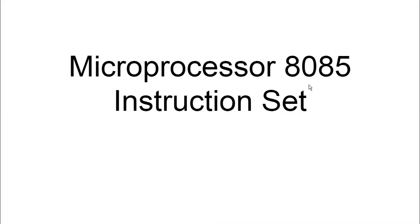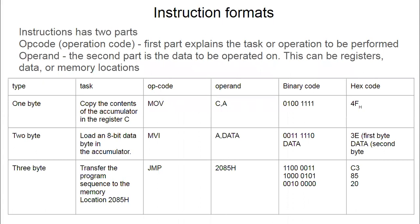In this video we are going to see the instruction set of microprocessor 8085, one by one. Here we are going to see just an introduction — already in the previous video we have seen about the three types of instructions based on instruction size: one byte, two byte, and three byte. For this we have seen the examples. Here I'll give a small intro and then we'll move on to the next.